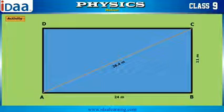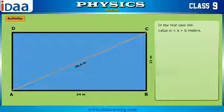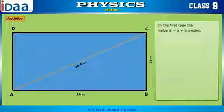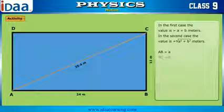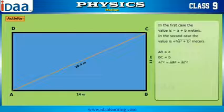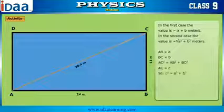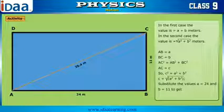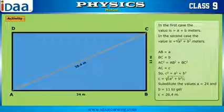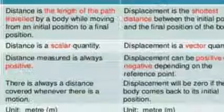The displacement can be directly calculated by applying the Pythagoras theorem: hypotenuse squared equals base squared plus altitude squared. Applying the values for the sides, the displacement is calculated to be the square root of a squared plus b squared, and the value will be equal to 26.4. Here, the displacement is equal to the length of the diagonal of the rectangular field.